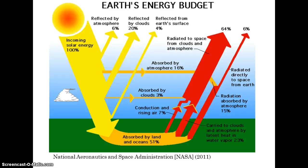Radiation from the sun is the source for two of the three major types of remote sensing images. First, radiation from the sun is reflected upward, which forms the basis for photographs and similar imagery. In this image from NASA (2011), note the energy reflected by the atmosphere, clouds, and surfaces.